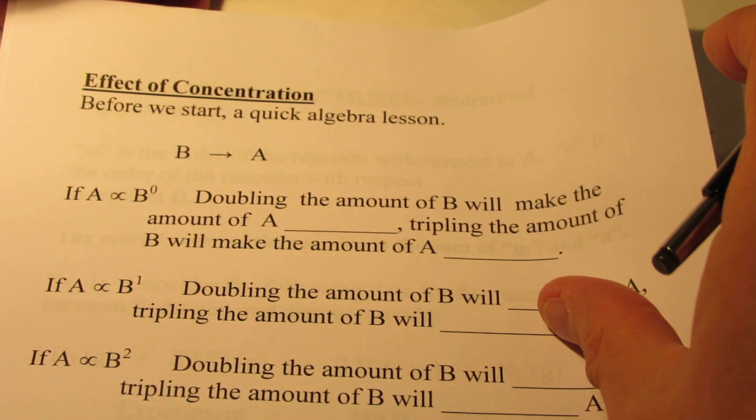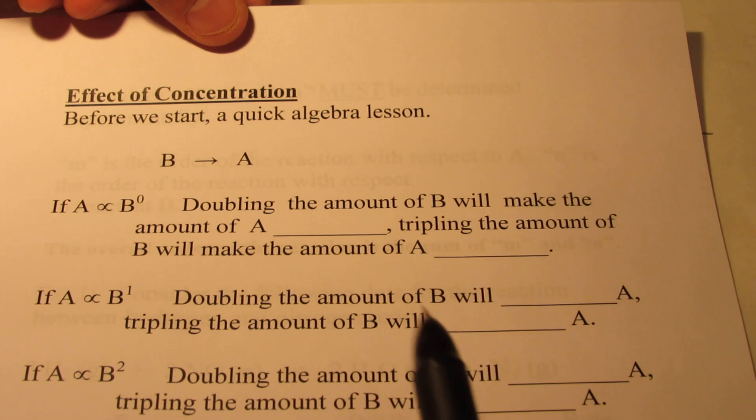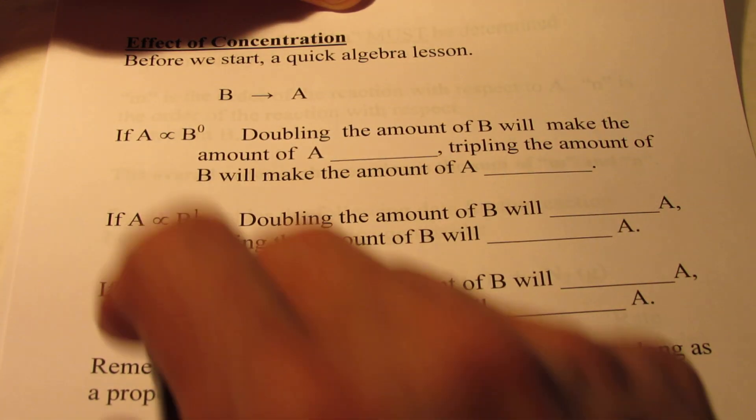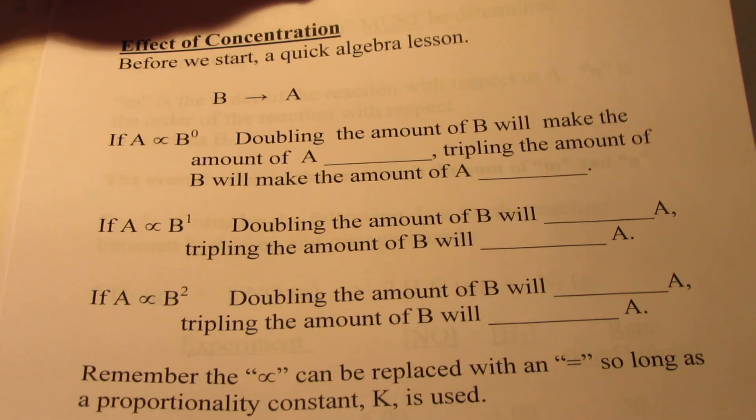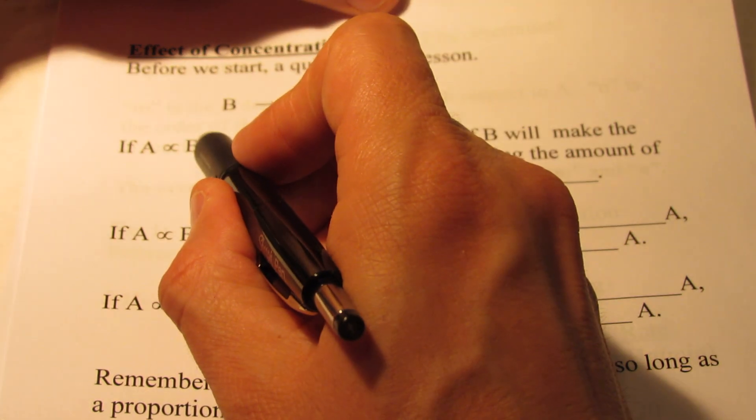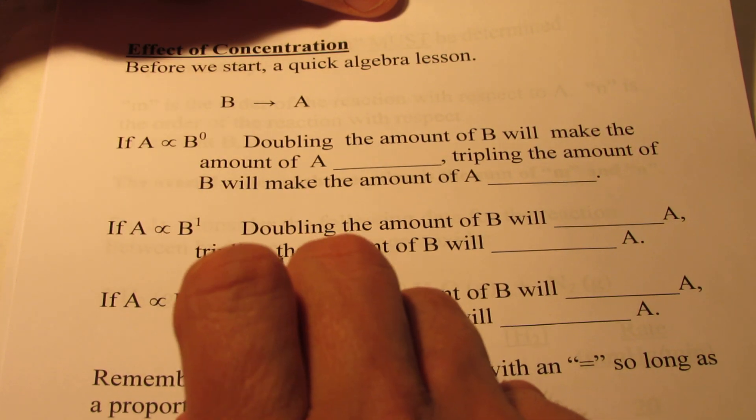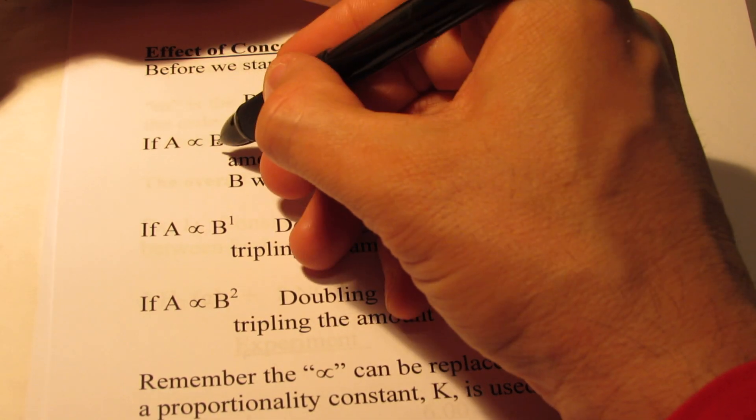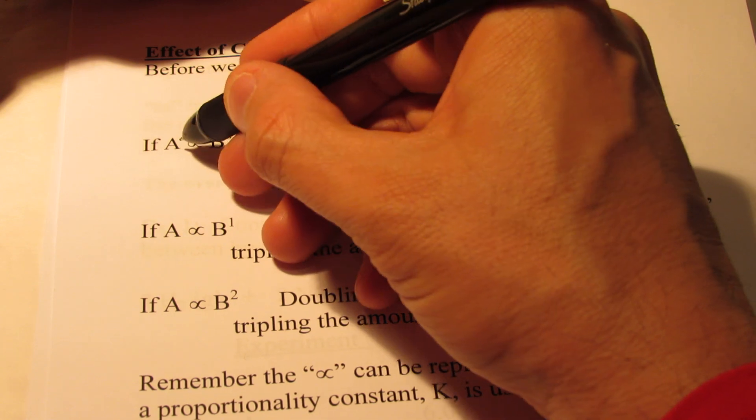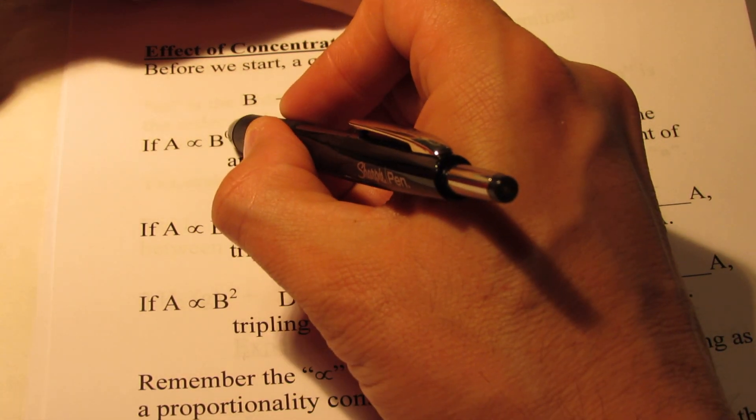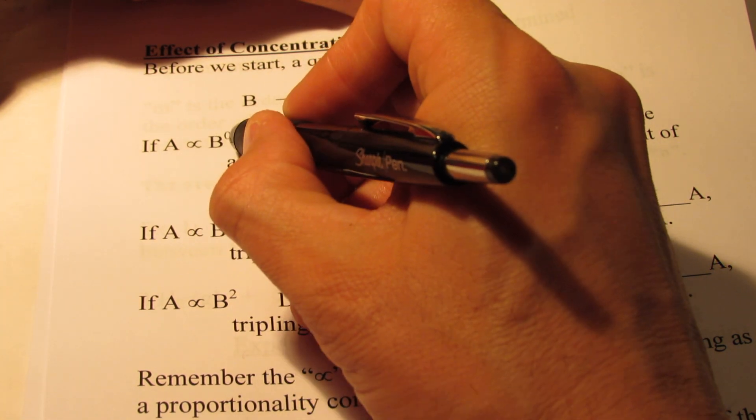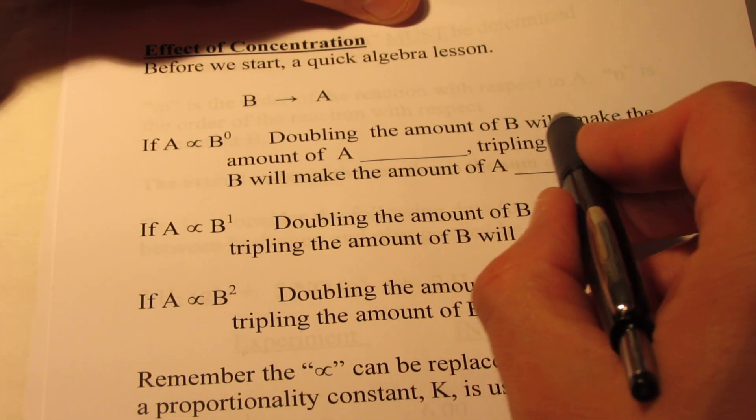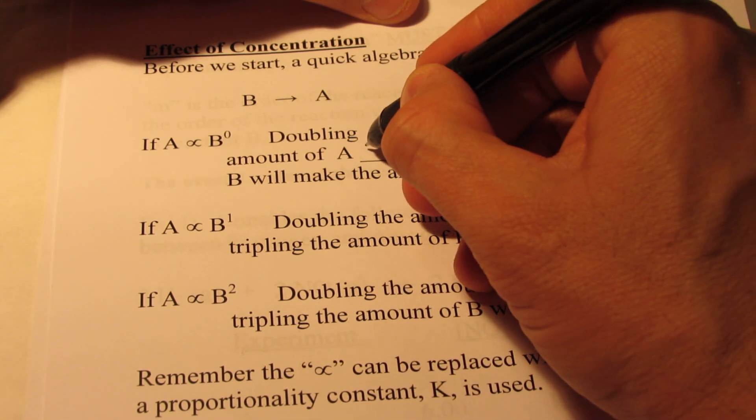Now we're going to talk about the effect that concentration has on the rate of a reaction. Before we start a quick algebra lesson, let's say I have B reacting to form A. And let's say that A is proportional to B to the zero power. Anything to the zero power is 1, isn't it? So if I double the amount of B, instead of being 1 to the zero power, this is 2 to the zero power. When it was 1 to the zero power, A was equal to 1. When it was 2 to the zero power, A was equal to 1. When it's 3 to the zero power, A was equal to 1. Doubling B will make the amount of A not change.